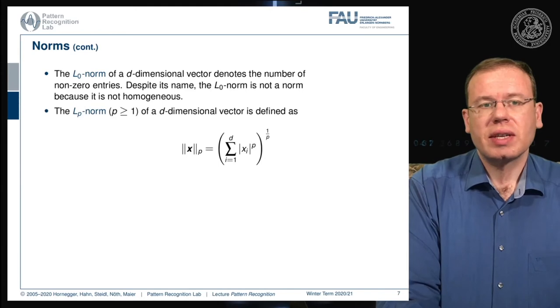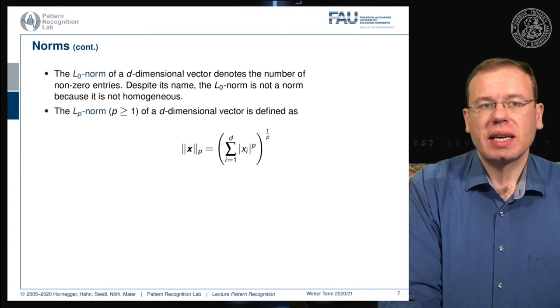Generally, this allows us to define an Lp norm, where p is a scalar value (note this is lowercase p). It's defined for p greater than or equal to one of a d-dimensional vector. You compute this with the element-wise absolute value of x to the power of p, summed up, and then take the pth root of the sum.